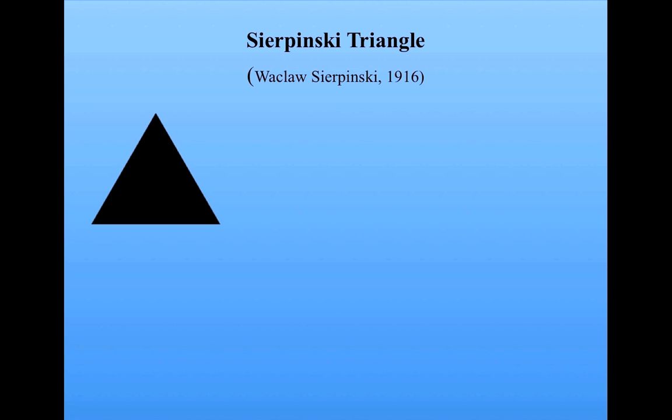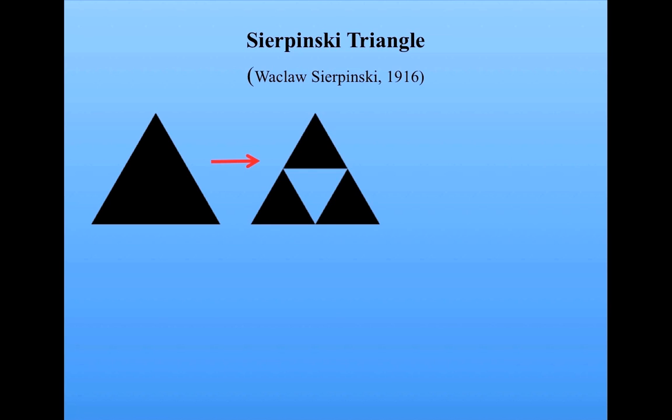For this fractal, we start with a triangle. Our rule for iteration is to remove the triangle formed by connecting the midpoints of the three sides. So we take the midpoint of each of the three sides of the triangle, and we connect them together and remove the triangle that results.